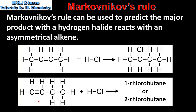Here we have the reaction between but-1-ene and hydrogen chloride. But-1-ene is an asymmetrical alkene, so when it reacts with hydrogen chloride there are two possible products: 1-chlorobutane or 2-chlorobutane.